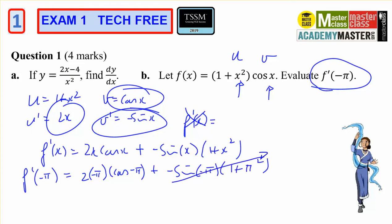However that's 0 because the sine of negative pi is 0. That's negative 1. That's negative 2 pi. The answer is 2 pi.